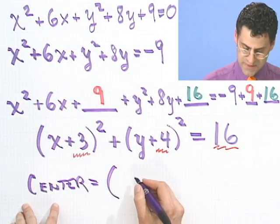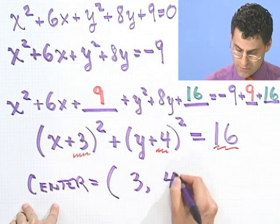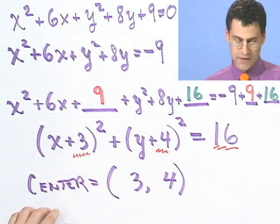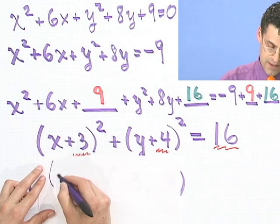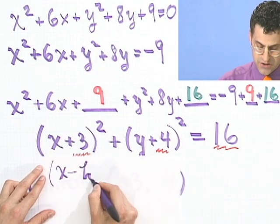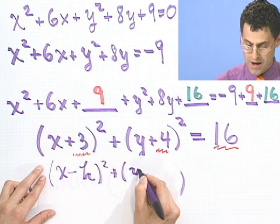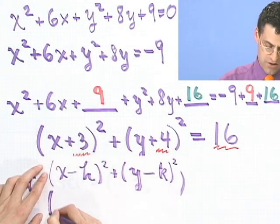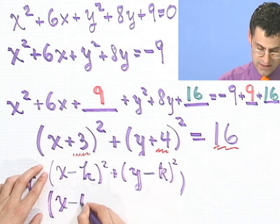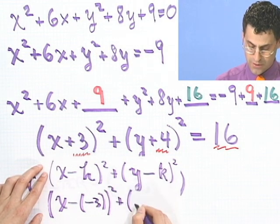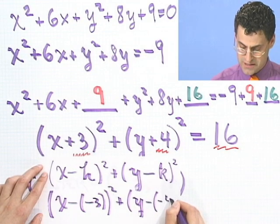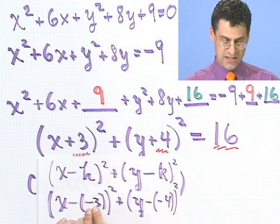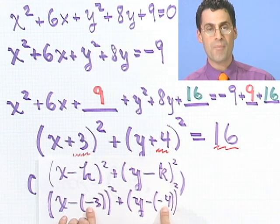So the center would equal what? Well, you may think the center is at 3, 4. If so, that's a great guess. But if so, then you're not quite remembering the formula for the circle, which is that it's going to be x minus h squared plus y minus k squared. So I have to write these things as minuses, which I do as saying x minus minus 3 squared plus y minus minus 4 all squared. And then it's more apparent what the center is.